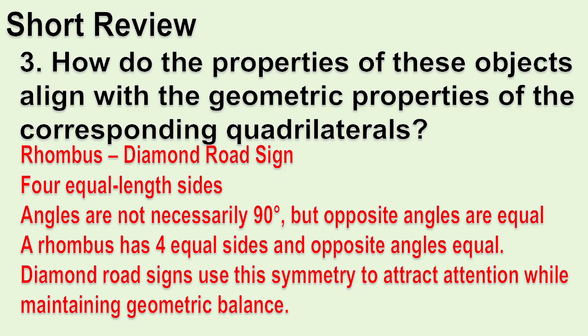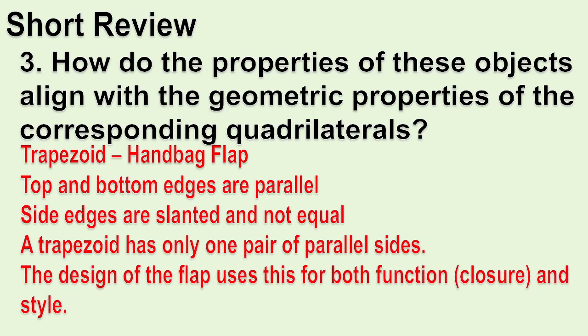Rhombus — Diamond road sign: Four equal-length sides; angles are not necessarily 90 degrees but opposite angles are equal. A rhombus has four equal sides and opposite angles equal. Diamond road signs use this symmetry to attract attention while maintaining geometric balance. Trapezoid — Handbag flap: Top and bottom edges are parallel; side edges are slanted and not equal. A trapezoid has only one pair of parallel sides. The design of the flap uses this for both function, closure, and style.